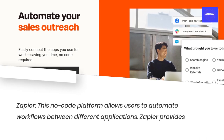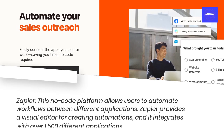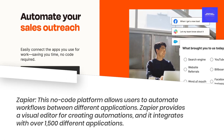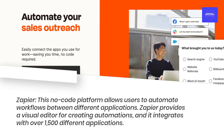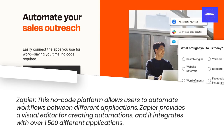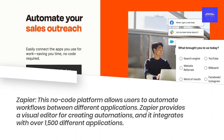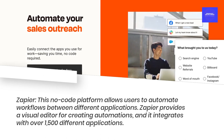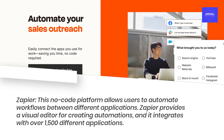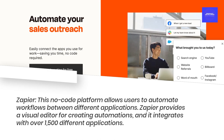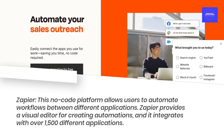Zapier — this no-code platform allows users to automate workflows between different applications. Zapier provides a visual editor for creating automations, and it integrates with over 1,500 different applications.